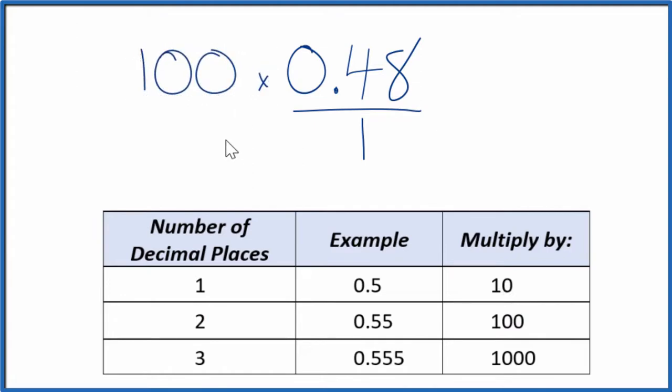So 100 times 0.48, that gives us 48, and that's a whole number. But we can't just multiply the numerator here by 100. We also have to multiply the denominator by 100. 100 divided by 100, that's just 1. So we're multiplying by 1. We're not changing the value, just the way it's written.